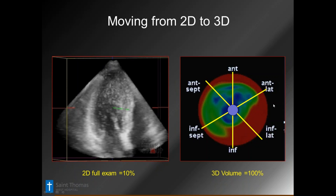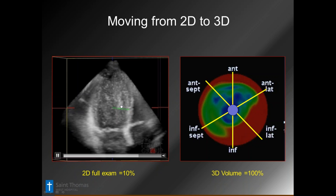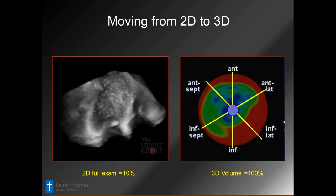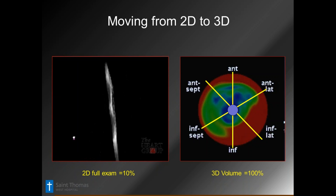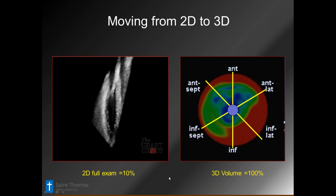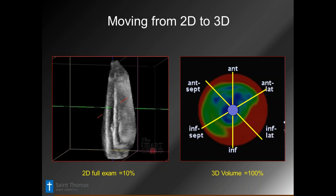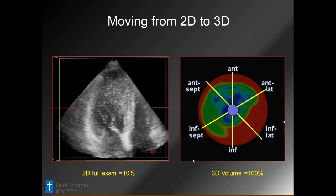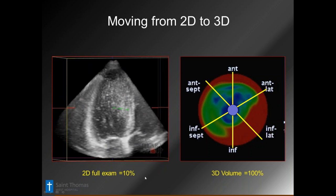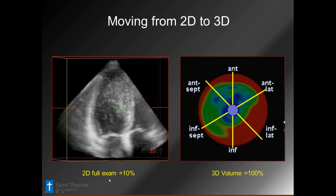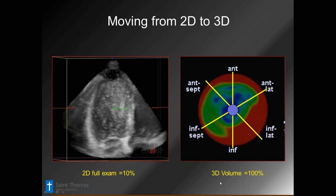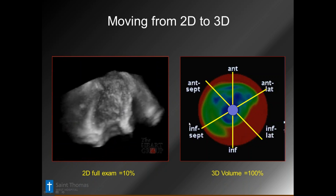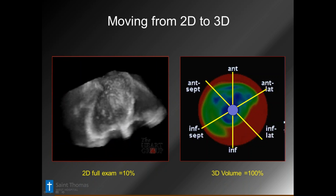Strain imaging is going to key in more and more on specific regions of dysfunction or ischemia. Dr. Nat Pandian at Tufts did a calculation where they took the thinness of a 2D slice through a full echo exam and determined that doing all the normal views of the LV, we were only seeing 10% of the myocardium — with all the short axis, long axis, and apical views. With the 3D volume, we have 100%. We just need to get to an age with better data sets, fewer heartbeats, and higher frame rates.